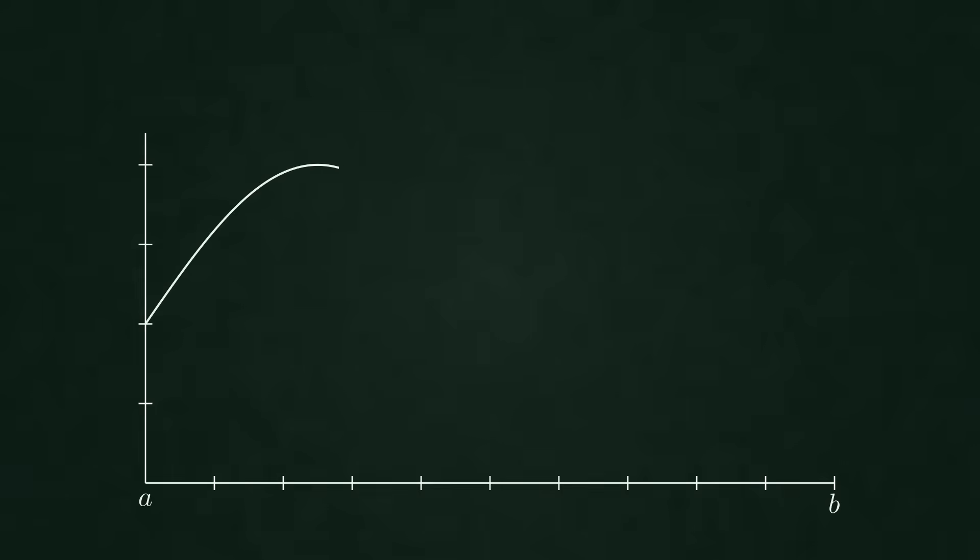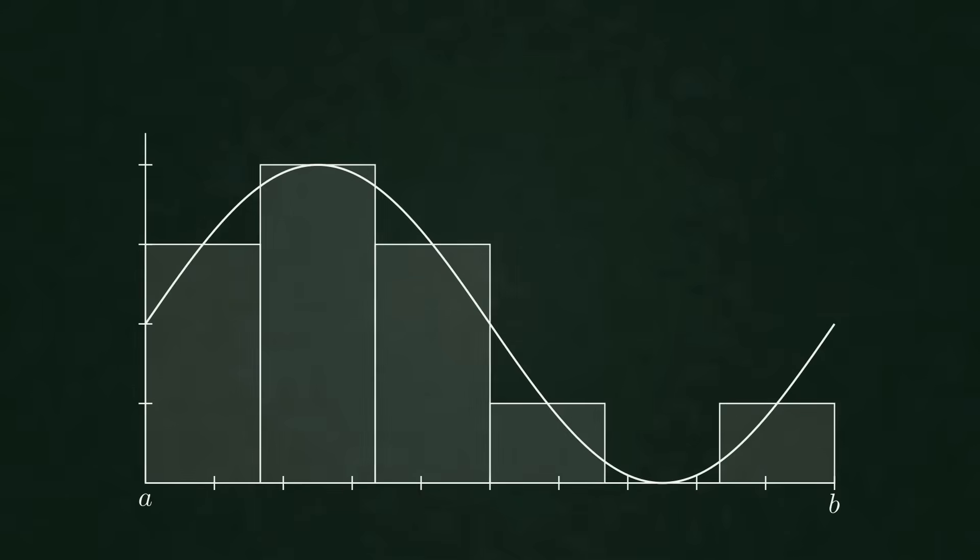We begin with the familiar construction. Rectangles beneath a curve. But instead of accepting it as a formula, we'll pay attention to what it's actually doing. Take one bar. Its width is delta x. Its height is the function evaluated at the bar's midpoint. Here it's x3.